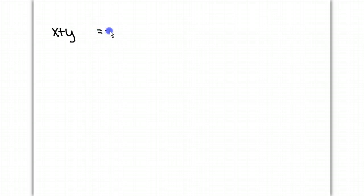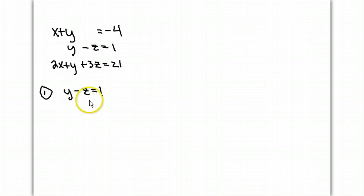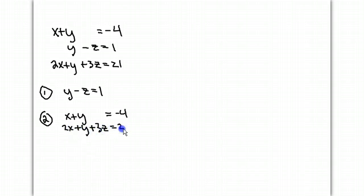Now let's say you have a matrix: x plus y — missing the z component — equal to negative 4. Another equation below it: y minus z equal to 1. And a third equation: 2x plus y plus 3z equal 21. If I pick the second equation, y minus z equal to 1, I'm already done with step 1 — I already have it in terms of two letters. In step 2, I get it in terms of y and z by picking the first and third equations: x plus y equal negative 4, and 2x plus y plus 3z equal 21.